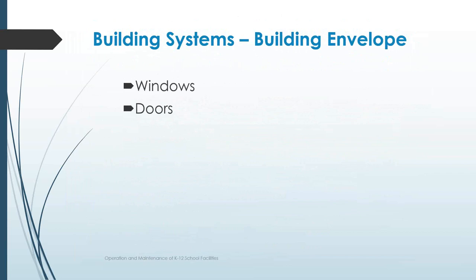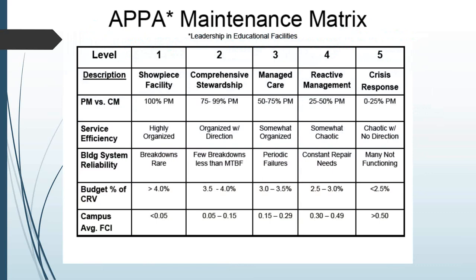With maintaining all of these building systems, there is also a level of maintenance that can be achieved. We turn to APPA to look at a matrix showing maintenance levels: level one is a showpiece facility, down to level five which is crisis response — just like we saw with cleaning. Most school districts, because of resources, operate somewhere in the two to three level on the maintenance matrix. Some operate down at four or five — a more reactive or crisis kind of maintenance where they wait and fix things when they break. The occupants of a building should know what the school district has set as their goal for a maintenance level so that expectations can be matched to that.